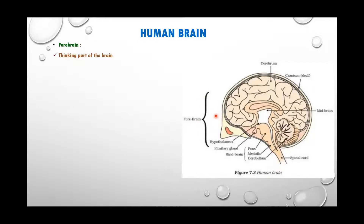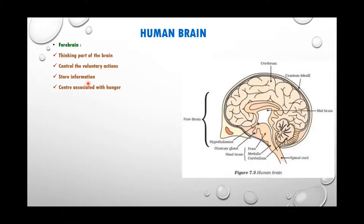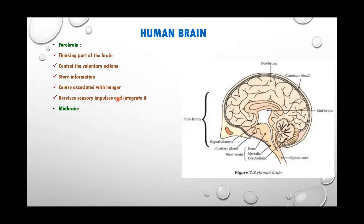The thinking part of the brain is the forebrain, containing the cerebrum. The cerebrum is divided into many areas called lobes, each performing specific functions — controlling voluntary actions, storing information, receiving sensory impulses, and being associated with hunger. The sense of fullness when we eat food is associated with a particular region of the cerebrum. All voluntary actions are performed here.